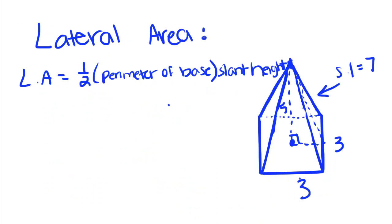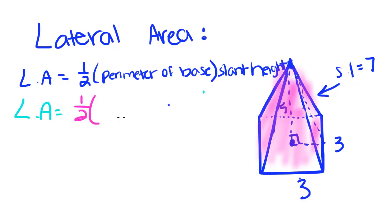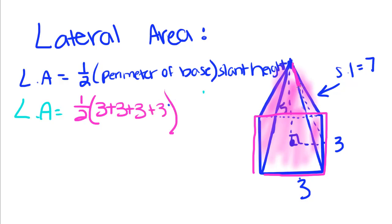Now we're going to talk about lateral area. Lateral area is equal to one-half the perimeter of the base times the slant height. When we find lateral area, we're finding everything but the area of the base — so we're finding the area of each one of these triangles. There are four triangles. Now remember, the slant height is not the same as the height we used to solve volume. The slant height goes from the top of the pyramid down one of the triangular faces and is perpendicular to one side of the square base. We're told the slant height is seven.